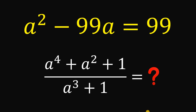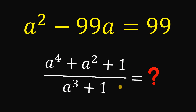Today we will answer a math challenge given by one of our followers. The question goes like this: given the equation a squared minus 99a equals 99, the goal is to evaluate the expression a raised to the fourth power plus a squared plus 1, all over a cubed plus 1.